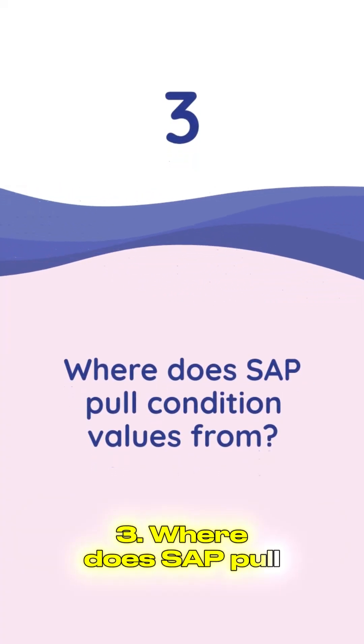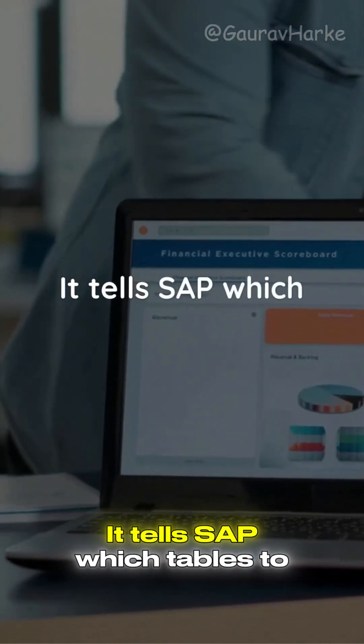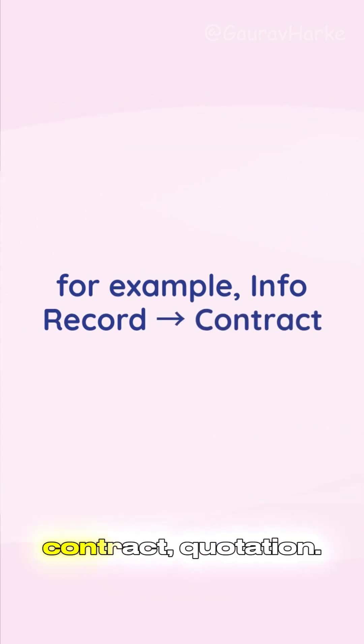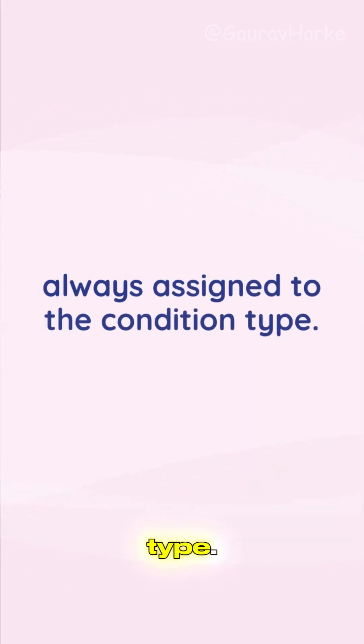Question 3: Where does SAP pull condition values from? That's the job of the access sequence. It tells SAP which tables to search and in what order—for example, info record, contract, quotation. It's always assigned to the condition type.